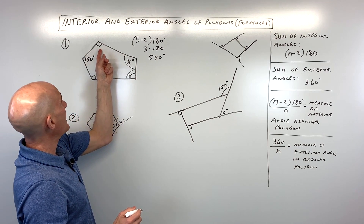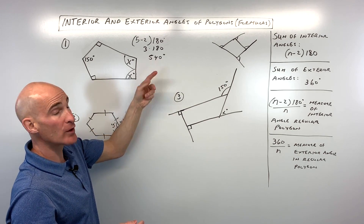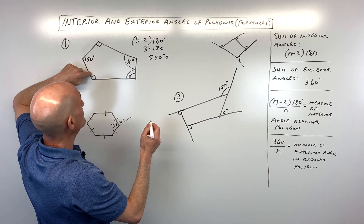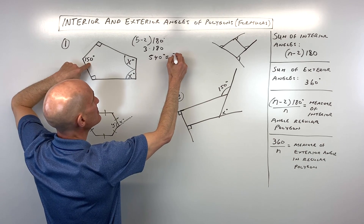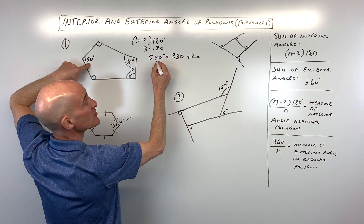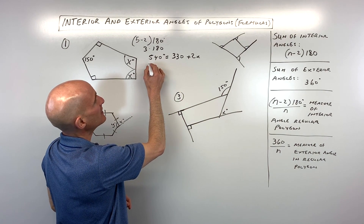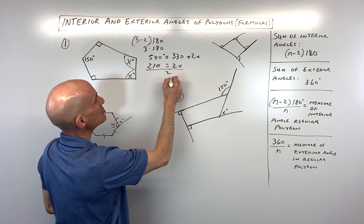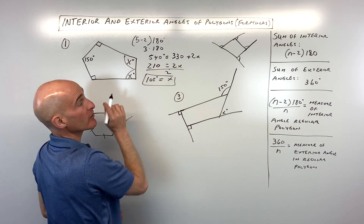So if we add these up: 90 + 150 + 90 + X + X has to equal 540. Combining the known angles: 90 + 90 is 180, plus 150 is 330. So 330 + 2X = 540. Subtracting 330 from both sides gives 2X = 210. Dividing both sides by 2, X equals 105 degrees — that's the measure of both of those angles.